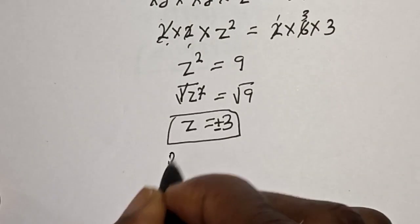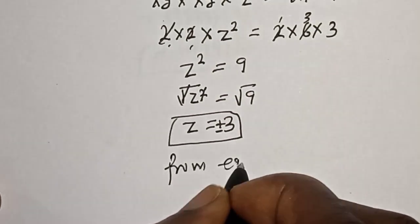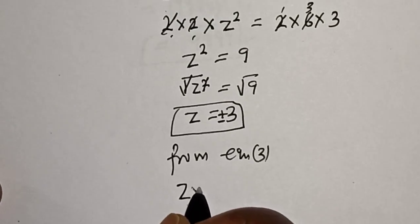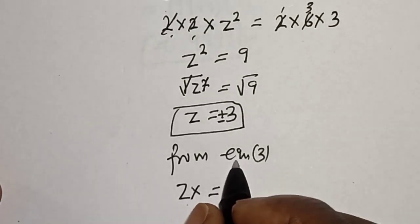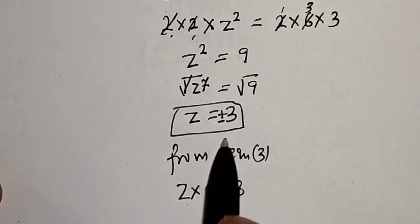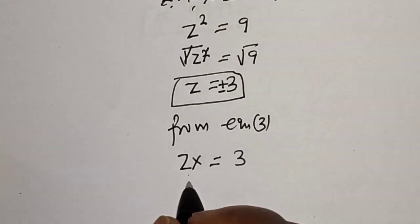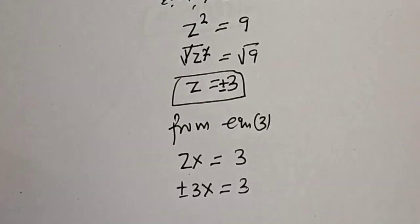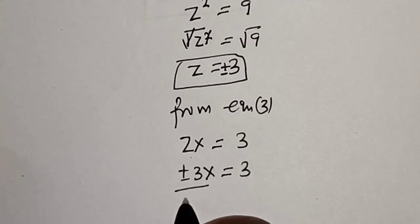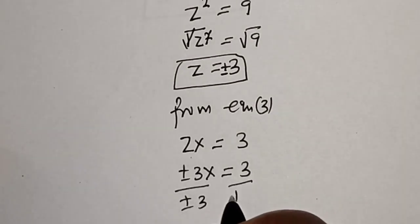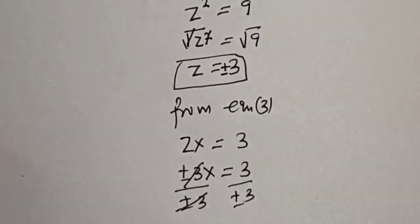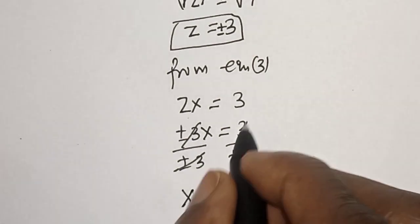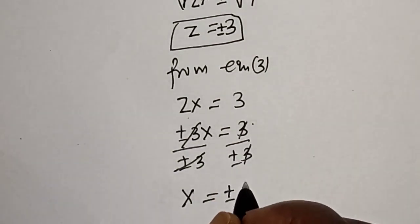From equation 3, we have Z·X is equal to 3, and we already know Z is plus or minus 3. Dividing both sides by plus or minus 3, the Z terms cancel, giving X is equal to plus or minus 1.